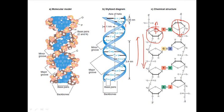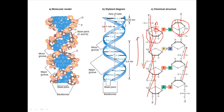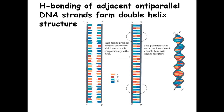On the complementary strand, the sugar head must face downward. Many students make the mistake of drawing both sugar heads pointing in the same direction even when they know the strands are antiparallel — this is a serious error. Also, the phosphodiester linkage is not a linear linkage; it is a staggered, oblique linkage.